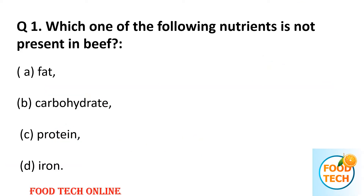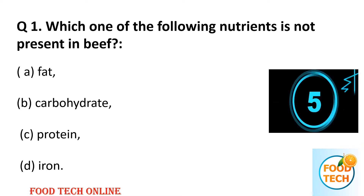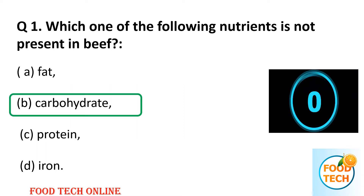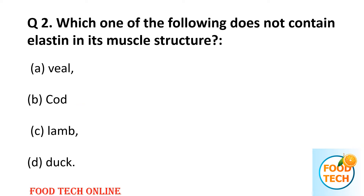Question 1: Which one of the following nutrients is not present in meat? A: fat, B: carbohydrate, C: protein, D: iron. Answer: B, carbohydrate.